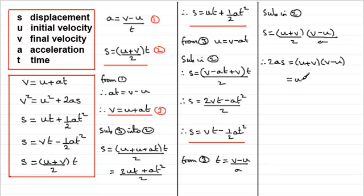And you can see the uv's cancel, leaving us with minus u squared plus v squared. So I could just write that as 2as equals, we'll put the v squared first, v squared minus u squared. So if we add u squared to both sides, we end up with v squared equals u squared plus 2as. And there you go. So that's the remaining equation.